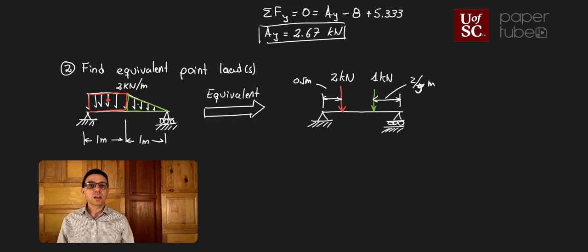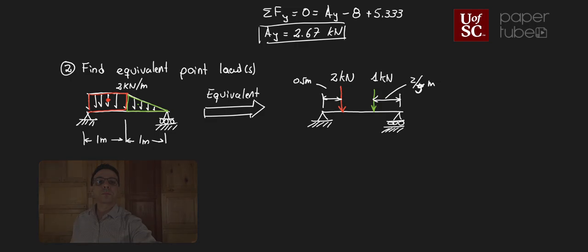The second option is to find a single point load that represents the whole system. We treat this as a composite section — a rectangle (number one) and a triangle (number two). I'll set up a table exactly like you would for a centroid problem: section number, area (in kilonewtons since this represents force), xi-bar in meters, and area times xi-bar in kilonewton-meters. We also need to define an x-y axis for reference.